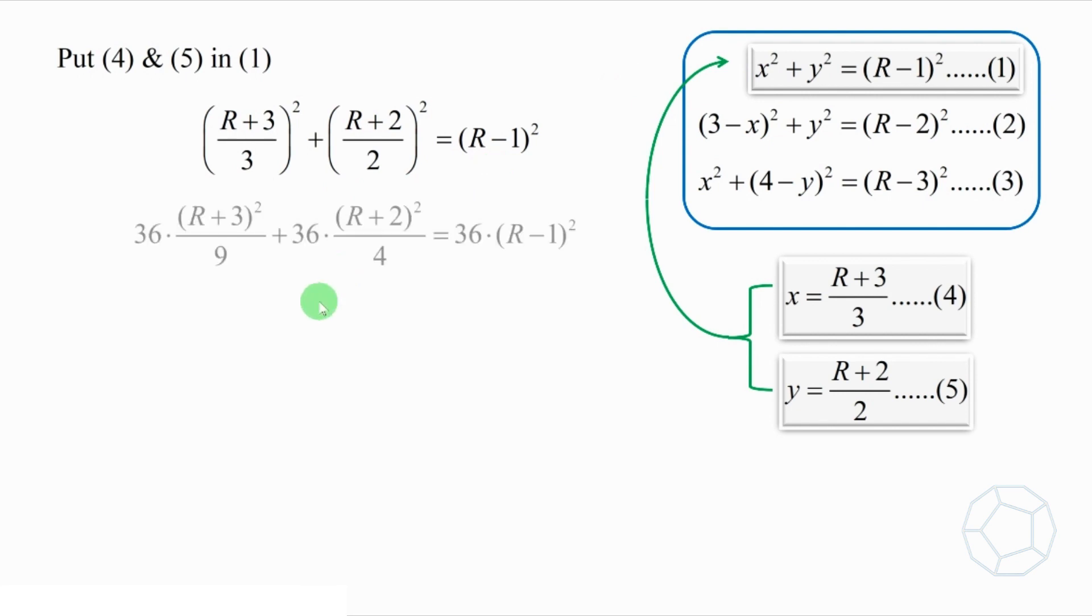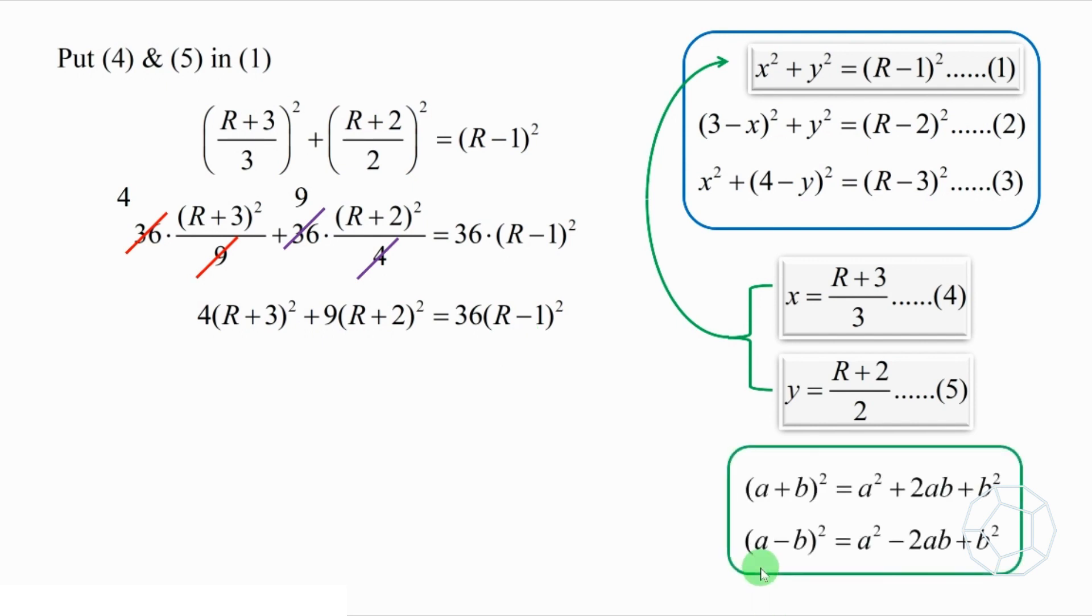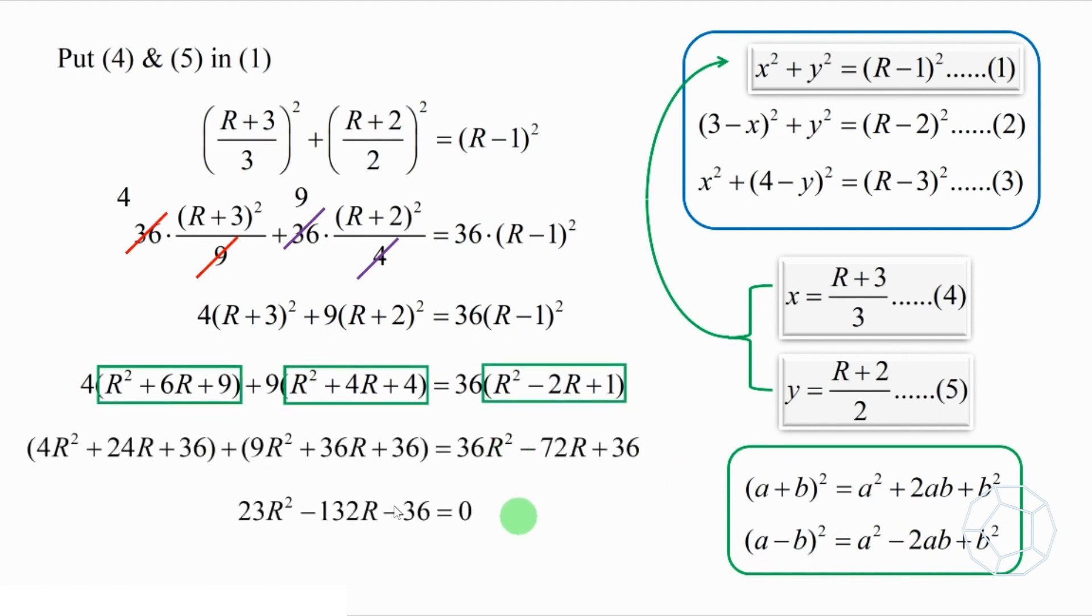Multiply the whole equation by 36 so that there are no more fractions. Then we have 4 times R plus 3 whole square plus 9 times R plus 2 whole square is equal to 36 times R minus 1 whole square. Apart from the previous identity, we shall also use this one. A plus B whole square is equal to A square plus 2AB plus B square. After simplification, we get a quadratic equation 23R square minus 132R minus 36 is equal to 0.